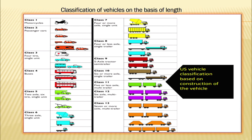Continuing the class system: Class 10 has 6 or more axles. Class 11 has 5 or fewer axles with multiple trailers — multi-trailer means more than one trailer. Class 12 has 6 axles with multi-trailers. Class 13 has 7 or more axles, also categorized as the final class.